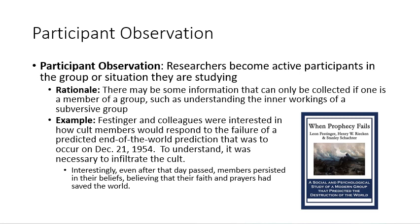An example your book describes is by Festinger, a famous researcher in cognitive dissonance. He studied how cult members — people brainwashed to believe certain things — would respond to the failure of an end-of-world prediction set for December 21, 1954. Festinger thought it wouldn't happen, so he disguised himself and joined the cult to see how they would handle it when the world didn't end.